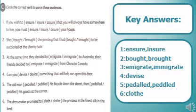Number three: At the same time they decided to immigrate to Australia; their friends decided to emigrate from China to Canada. 'Immigrate' means to move to a non-native country; 'emigrate' means to move away from one's location. Circle 'immigrate' in the first blank and 'emigrate' in the second.